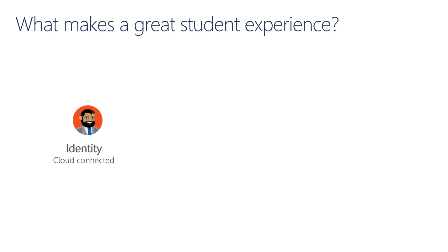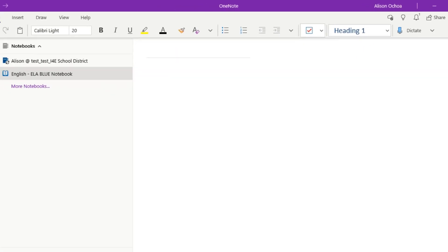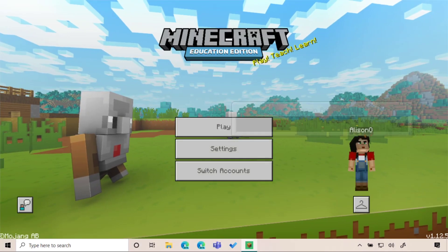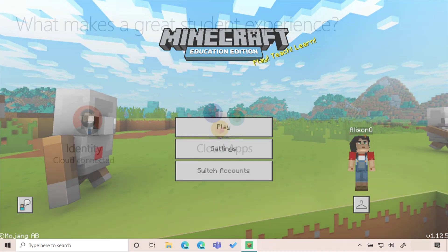Her identity is Cloud Connected, meaning that she can access cloud applications. Cloud applications are applications that are designed to leverage these cloud identities. For example, when we saw Alison opening OneNote, she was identified as Alison. But this can apply to different applications — for example, Minecraft Education Edition, and so on.